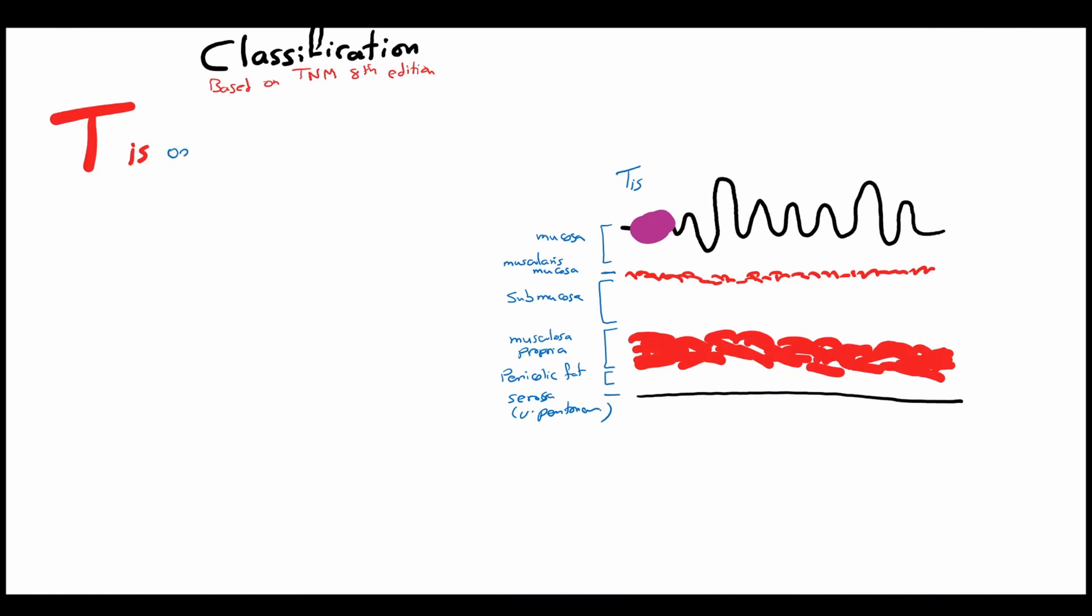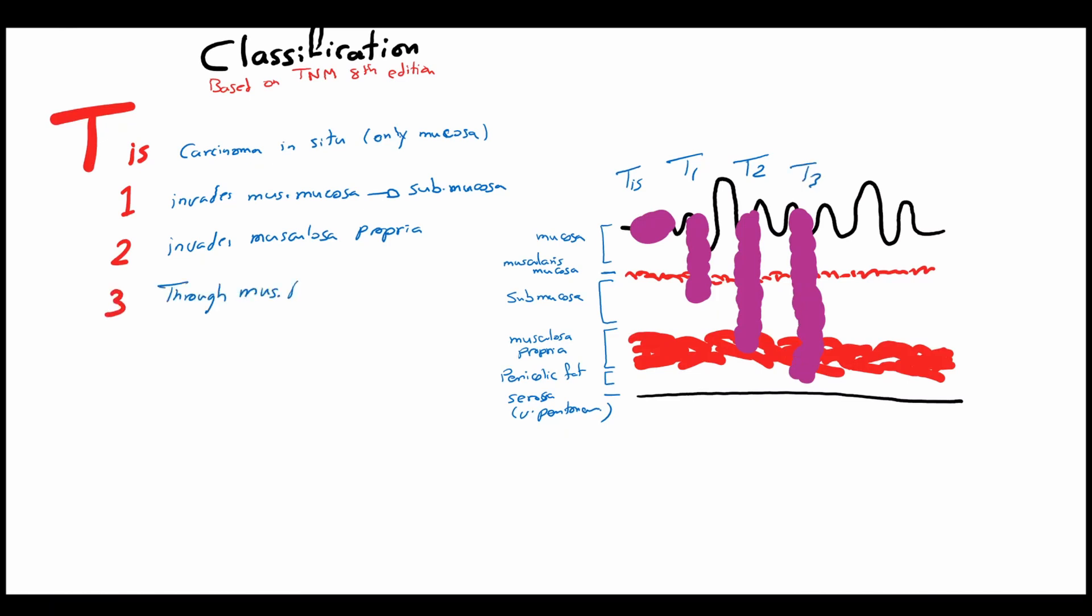A superficial tumor which is only confined to the mucosal layer is called carcinoma in situ or TIS. A second stage is the T1 tumor which invades the muscularis mucosa and reaches the submucosal layer. Reaching the submucosa is a landmark in the natural history of any tumor because this layer is rich with lymphatic supply and the probability of lymphatic spread is dramatically increased. A T2 tumor penetrates the submucosa and invades the muscularis propria. While the T3 tumor reaches the muscularis propria and reaches the pericolic fat.